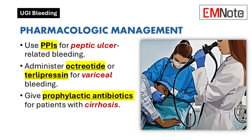Proton pump inhibitors are indicated for non-variceal bleeding associated with peptic ulcer disease; high-dose intravenous omeprazole is commonly used. Somatostatin analogs like octreotide can reduce bleeding from varices by inhibiting gastric acid secretion and promoting splanchnic vasoconstriction. Prophylactic antibiotics, such as ceftriaxone, are recommended for patients with cirrhosis to lower the risk of infections and related complications.